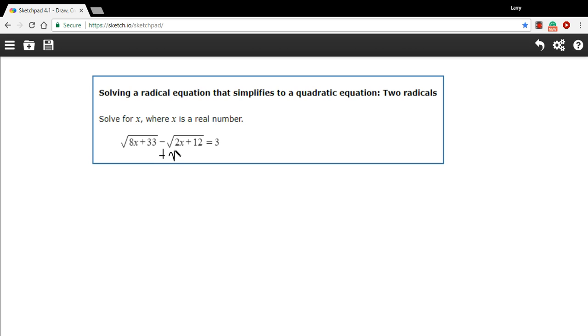I'm going to add this square root of 2x plus 12 to both sides. I'll rewrite that equation down here now. We've got the square root of 8x plus 33, and then we've got 3 plus the square root of 2x plus 12.